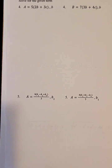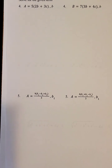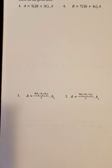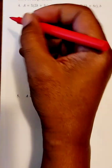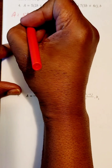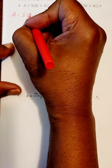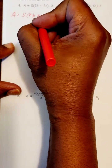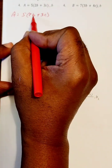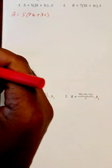We're going to be solving terms or isolating terms inside formulas. Our next formula is A equals 5 times 2B plus 3C, and we're trying to isolate the B here.